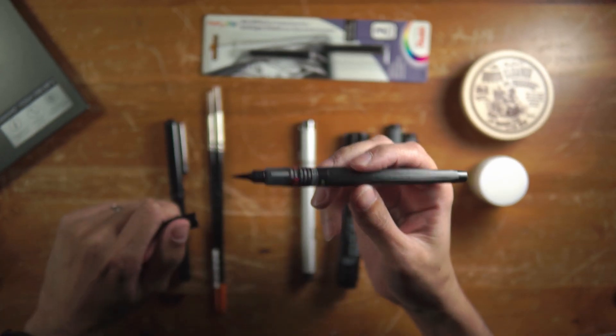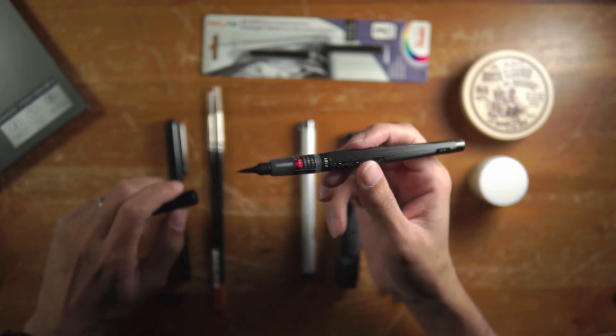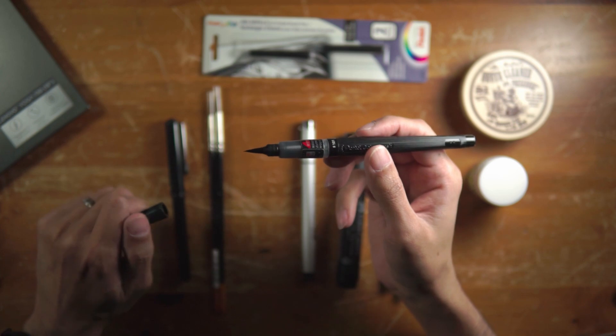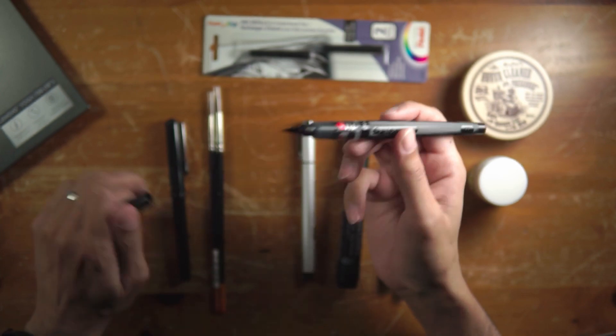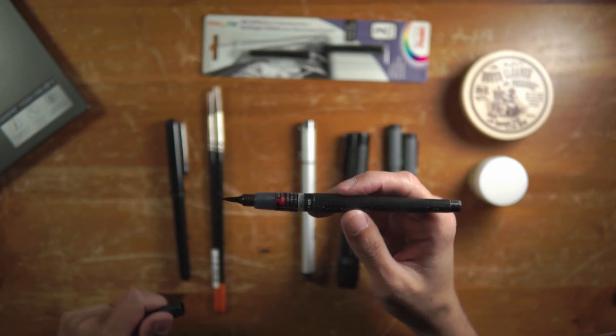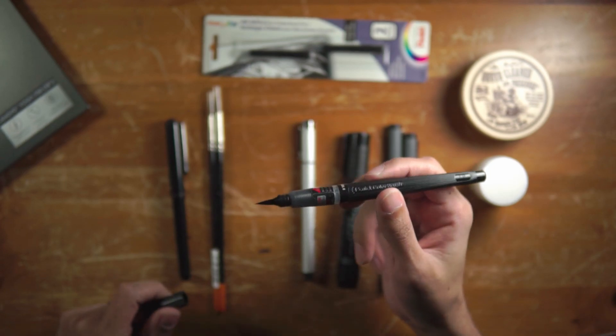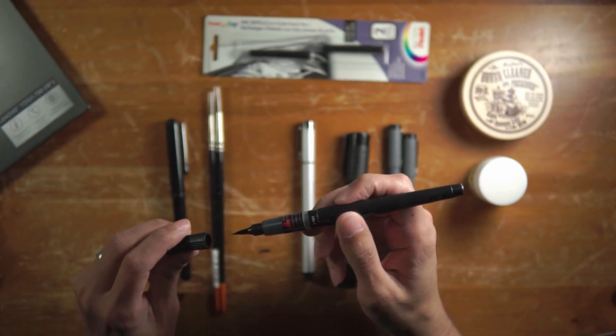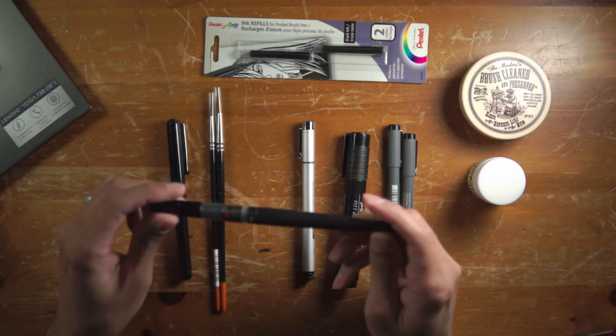Now the difference between this one and the Pentel pocket brush pen is that you can get thicker lines with this. So I generally use this to fill in blacks when I'm using my Pentel pocket brush pen. And on occasions, if I'm using the Kalinsky's, I might use this to fill in some black areas because they can cover a wide area.